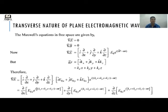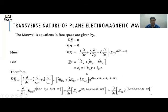Applying the free space Maxwell equation div E = 0, we expand the divergence operator on E(r,t). Since K·r = K_x x + K_y y + K_z z, we substitute the field components and open up K·r accordingly.